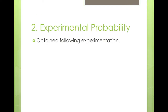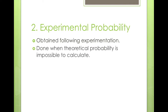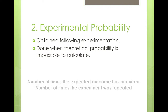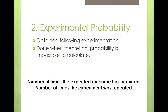The second type of probability is called experimental probability, whose keyword is experiment. It is obtained following an experimentation, and it is used when theoretical probability is impossible to calculate — you can't just do this on one try. The number of times the expected outcome has occurred over the number of times the experiment was repeated is how you calculate experimental probability.